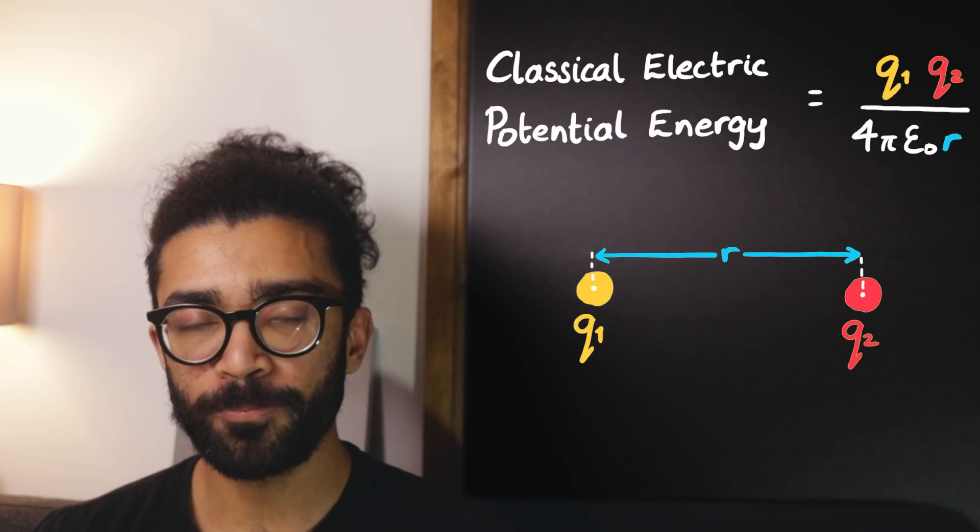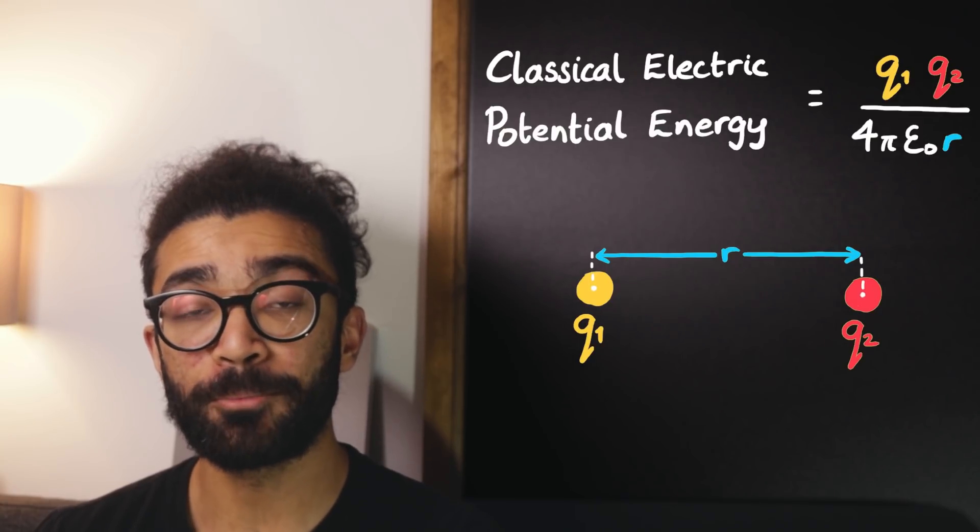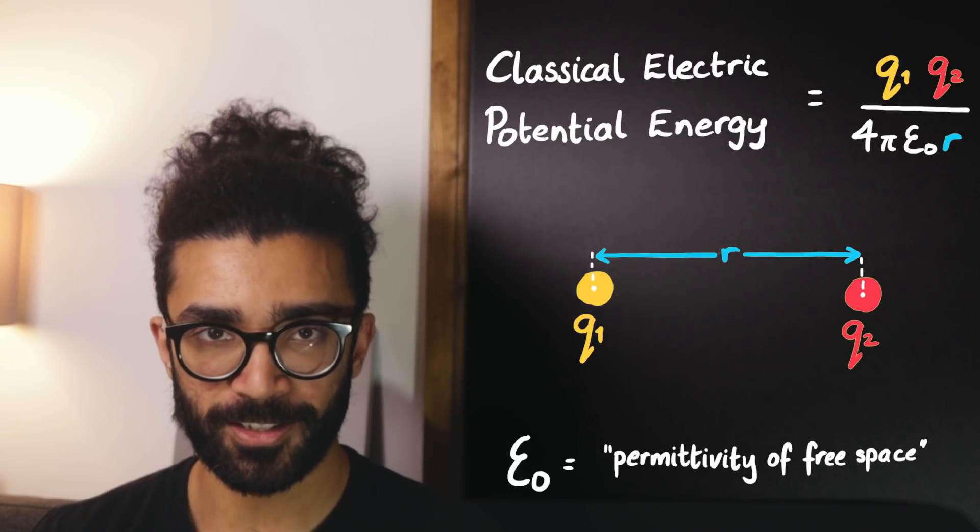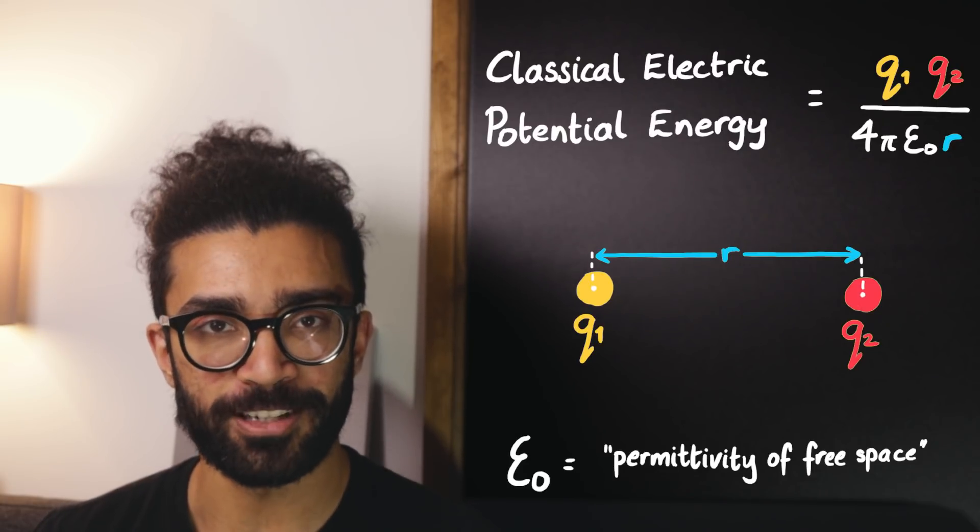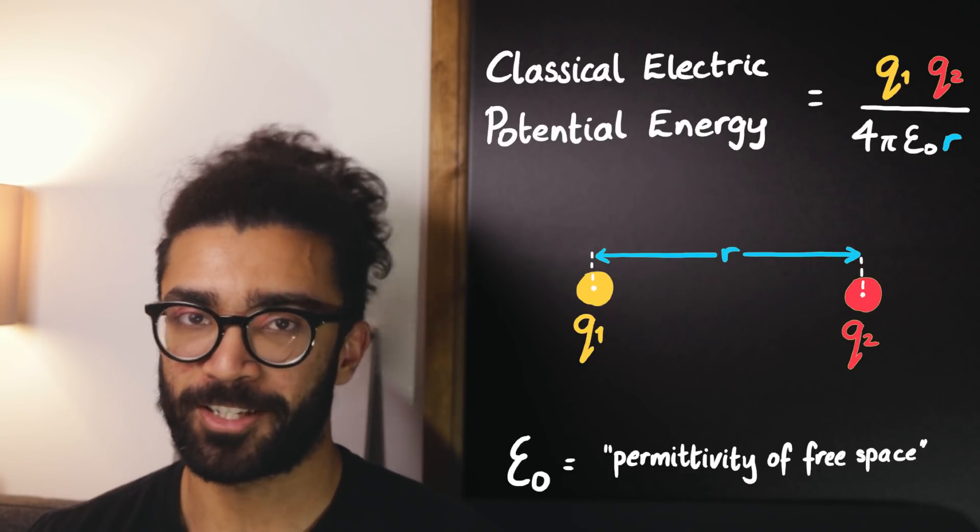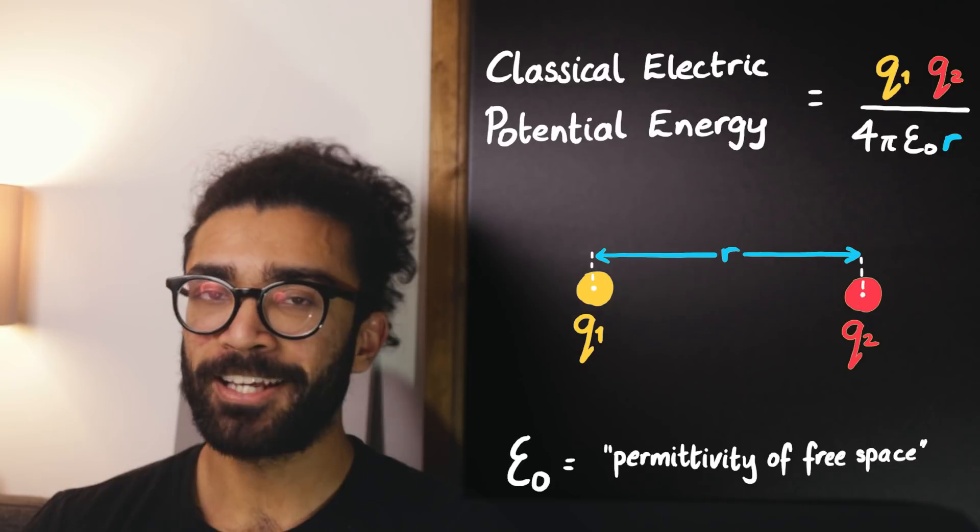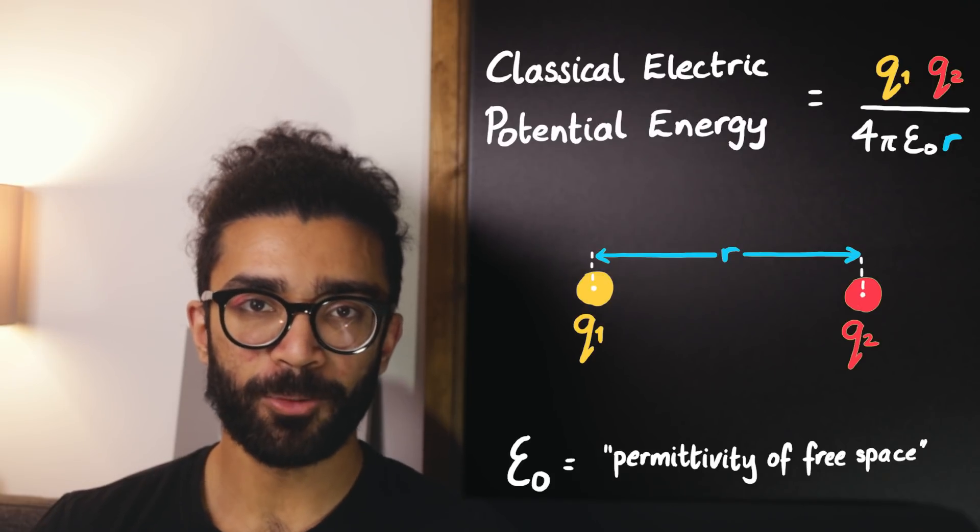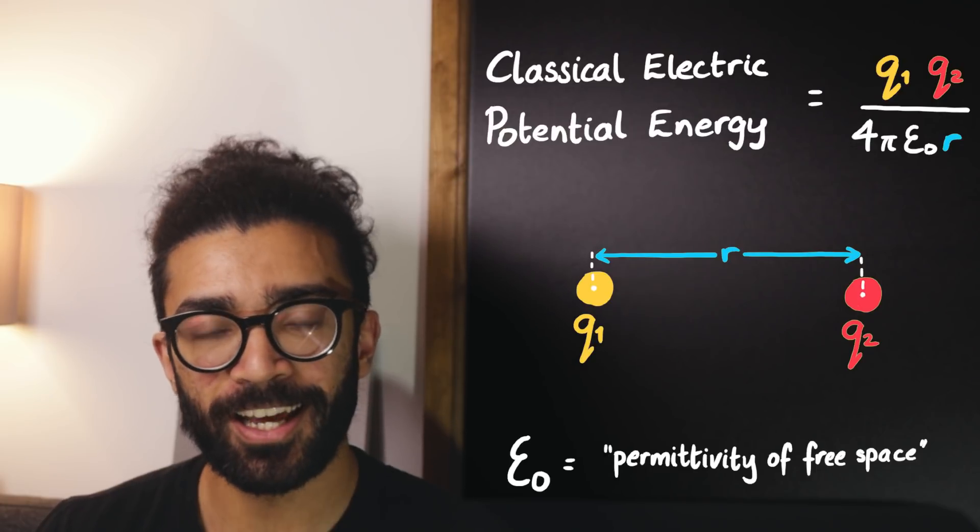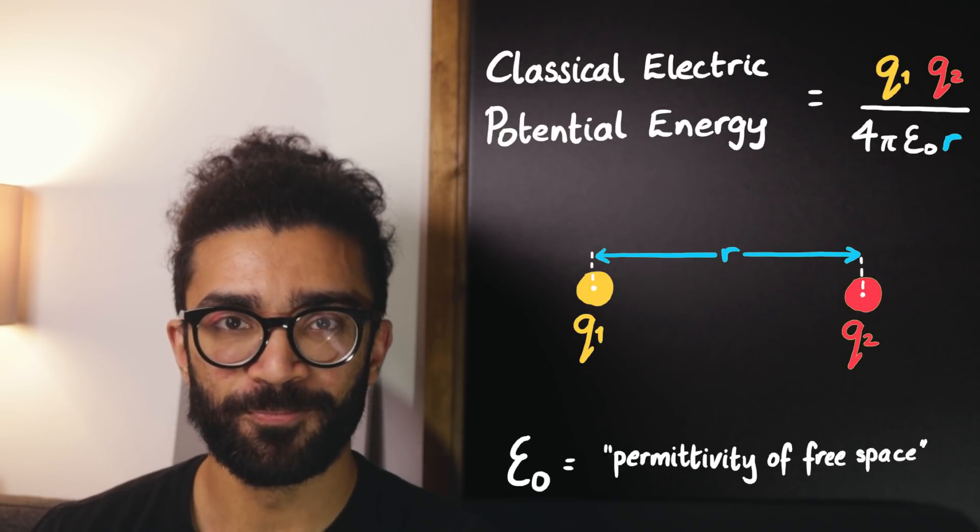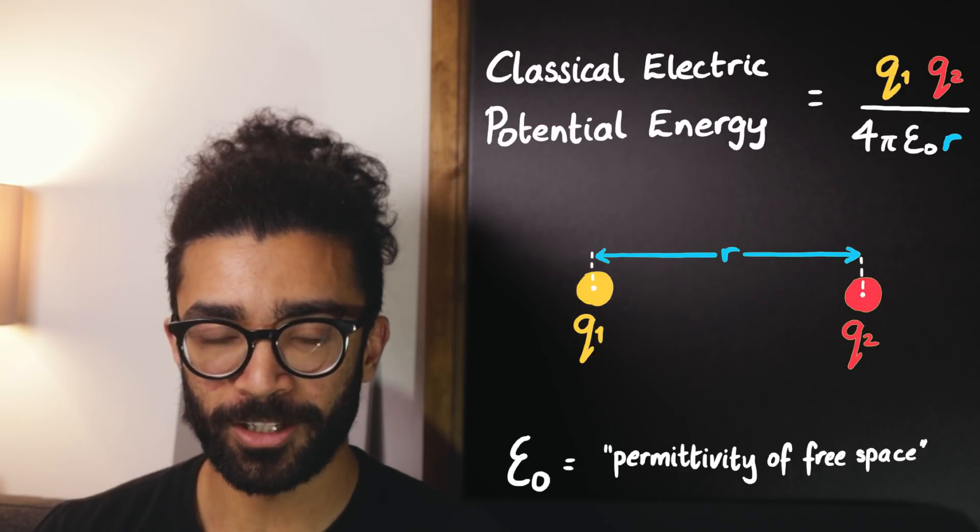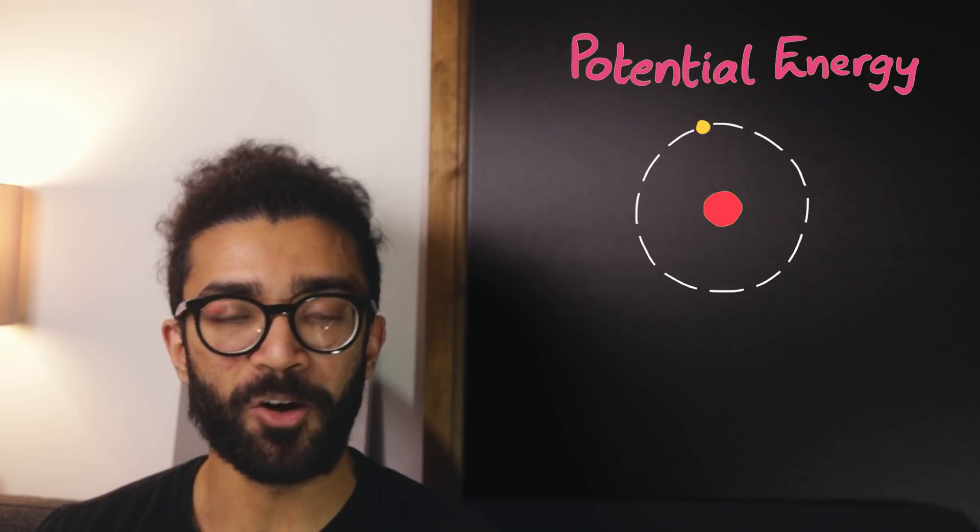The potential energy of the system is given by this expression: q1 multiplied by q2 divided by 4 pi epsilon naught r, where epsilon naught is a universal constant. It's known as the permittivity of free space. It's just a property of the vacuum of empty space, if you want to think about it like that. If you want to know where this equation comes from, because I realise if you're unfamiliar with it, it might look like I'm just pulling it out of thin air, resources in the description. So like I said, we can take this equation and pull it into the quantum mechanical world and find the potential energy of our system.